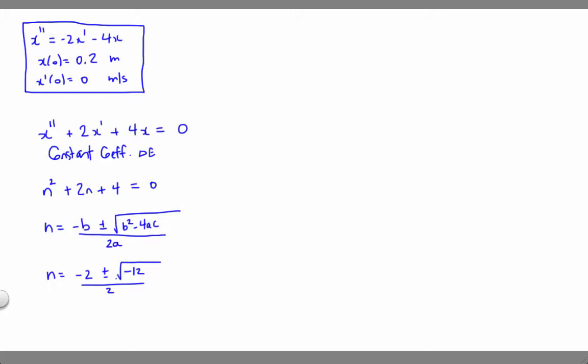So let's simplify this root here. Let's think of that as root 4 times root 3 times root negative 1, and that way we can say n is equal to negative 2 plus or minus 2 root 3i. Remember, i is the symbol we're using for square root of negative 1, and that's all divided by 2. So we can divide both terms in the numerator by 2, and we get negative 1 plus or minus root 3i.